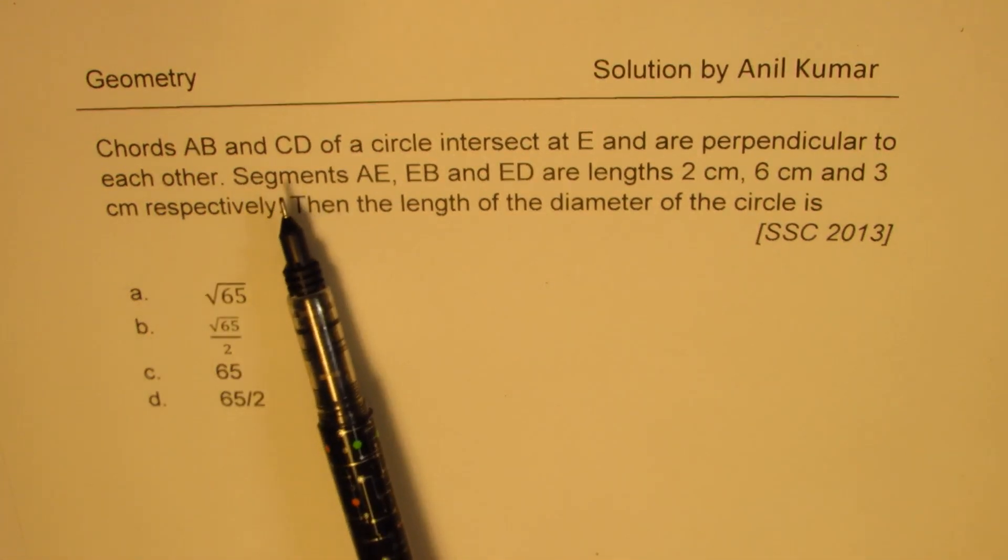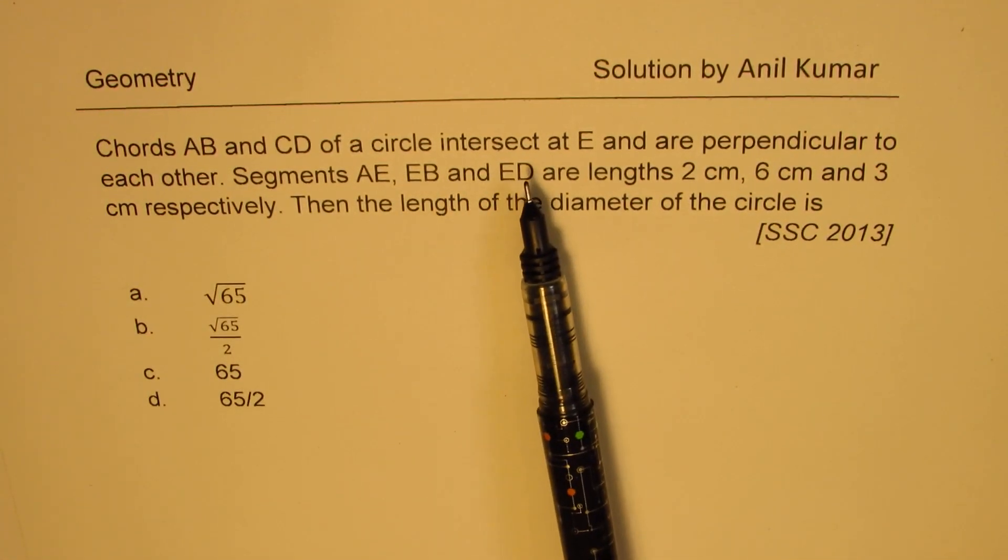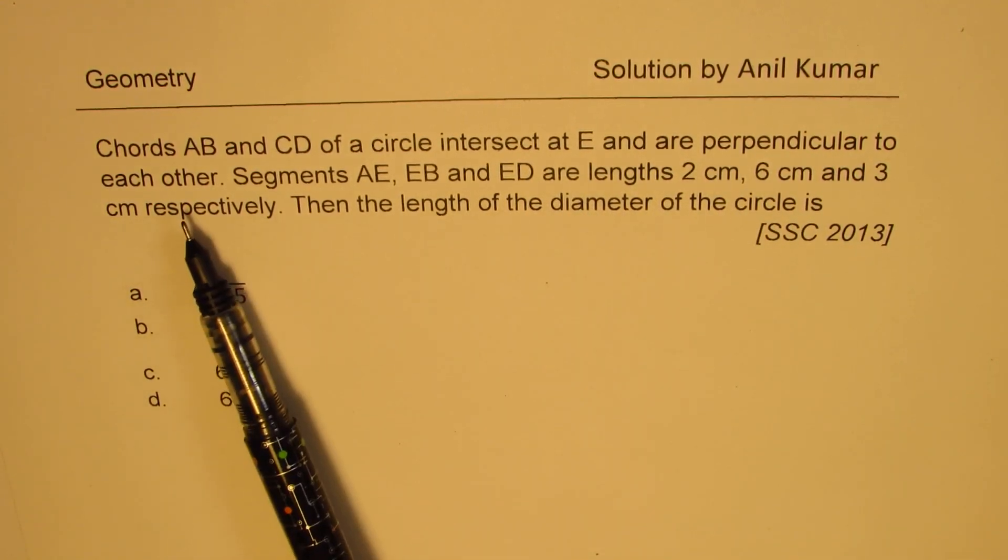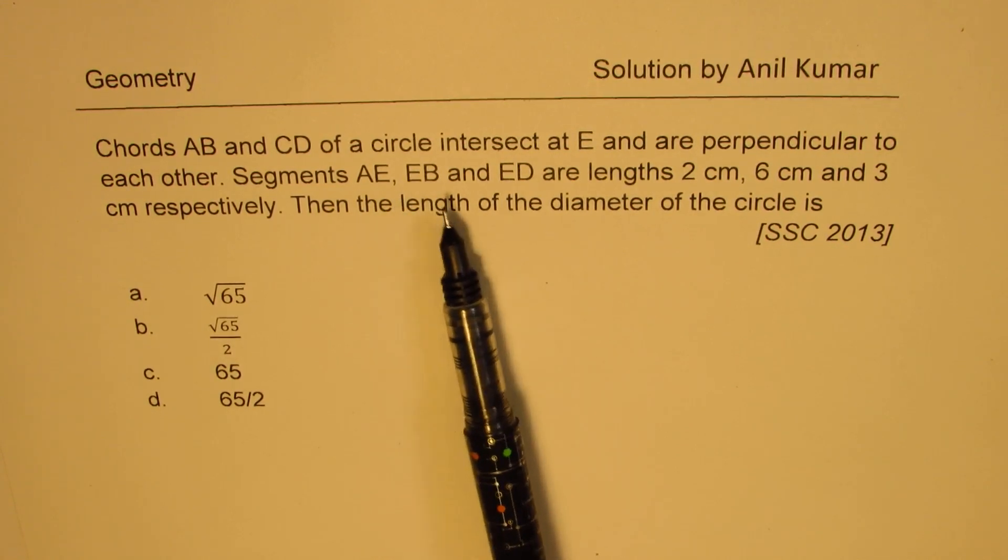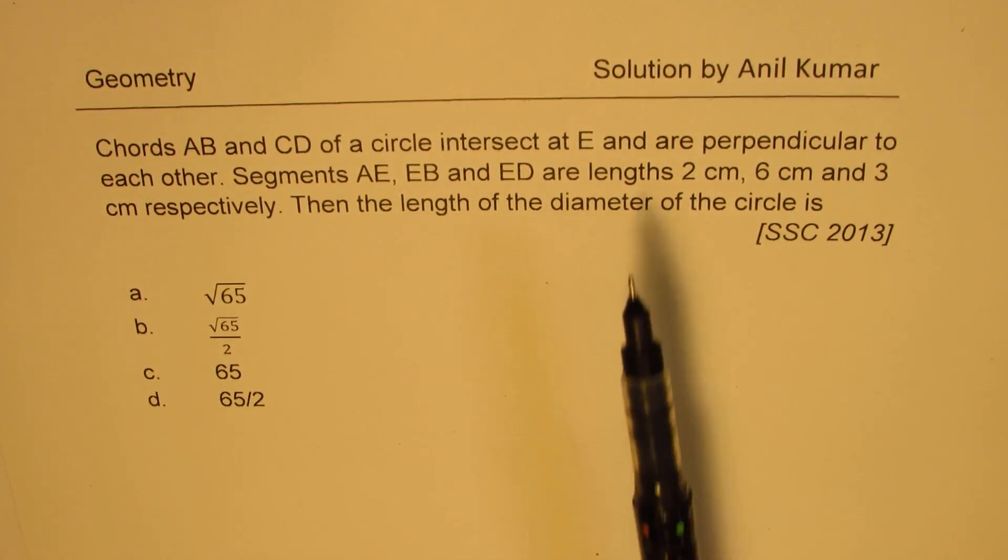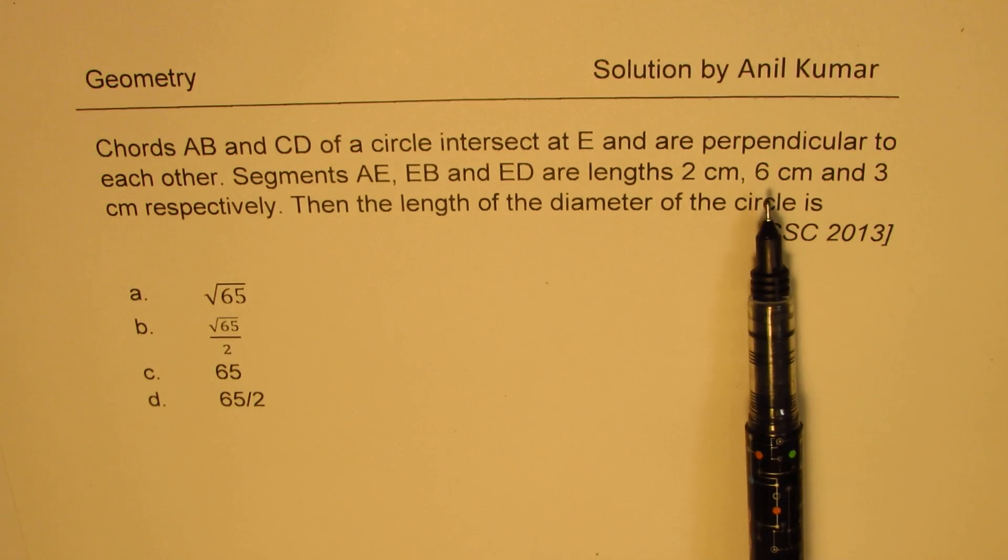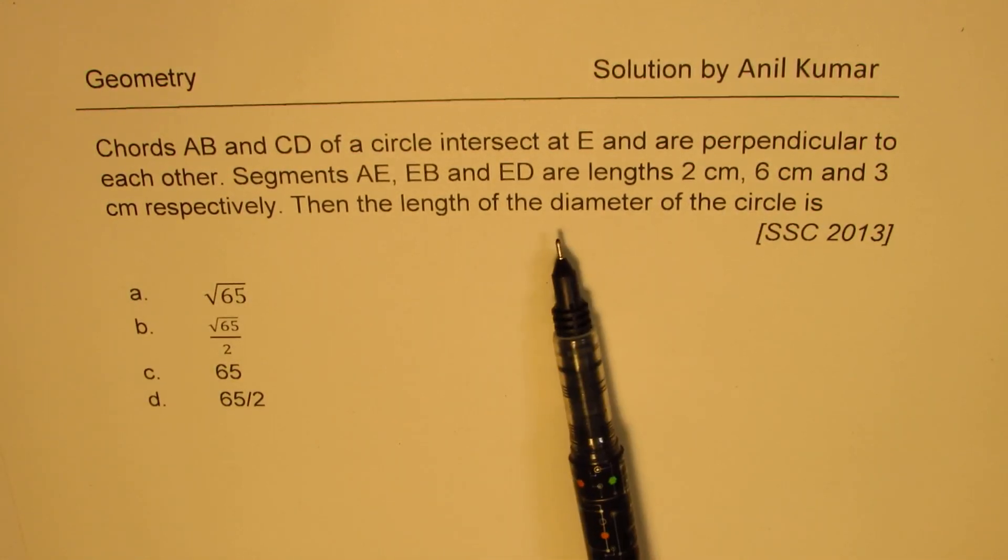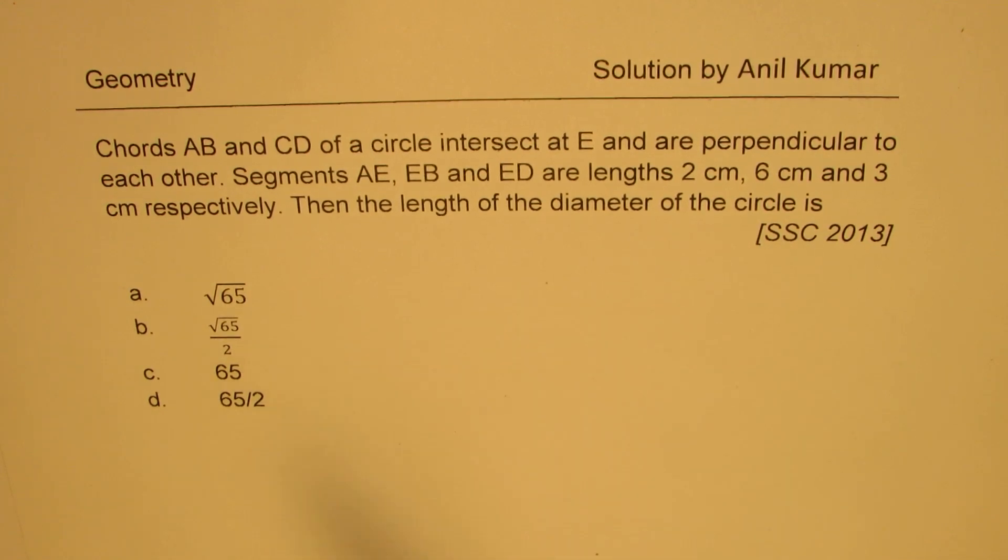Let me summarize here the solution of this particular question. So the question here is: Chords AB and CD of a circle intersect at E and are perpendicular to each other. Segments AE, EB and ED are lengths 2 cm, 6 cm and 3 cm respectively. Then the length of the diameter of the circle is what? So that is what you need to figure out.